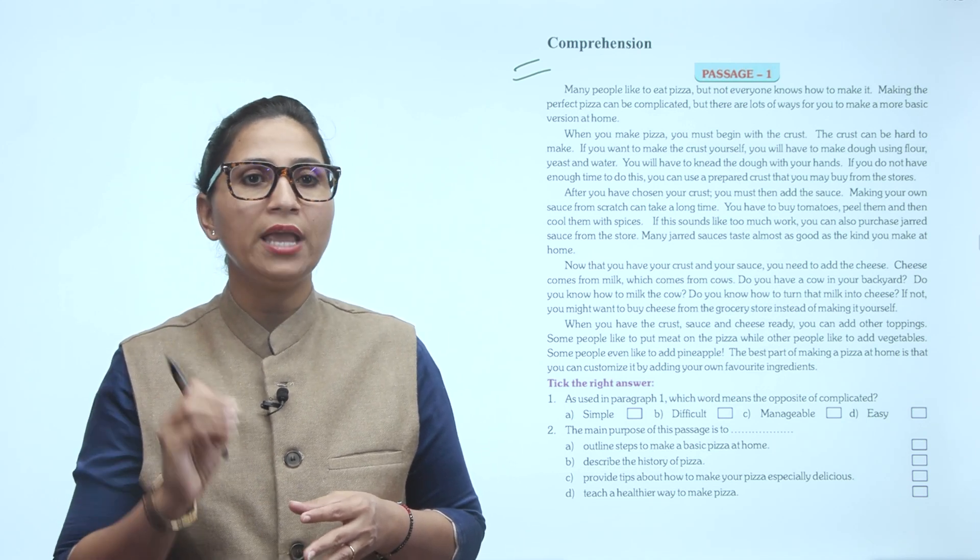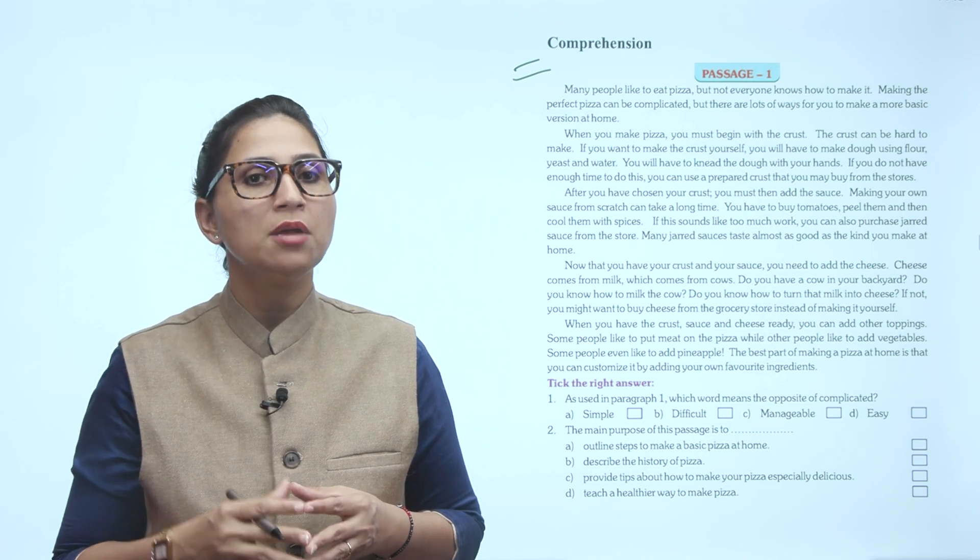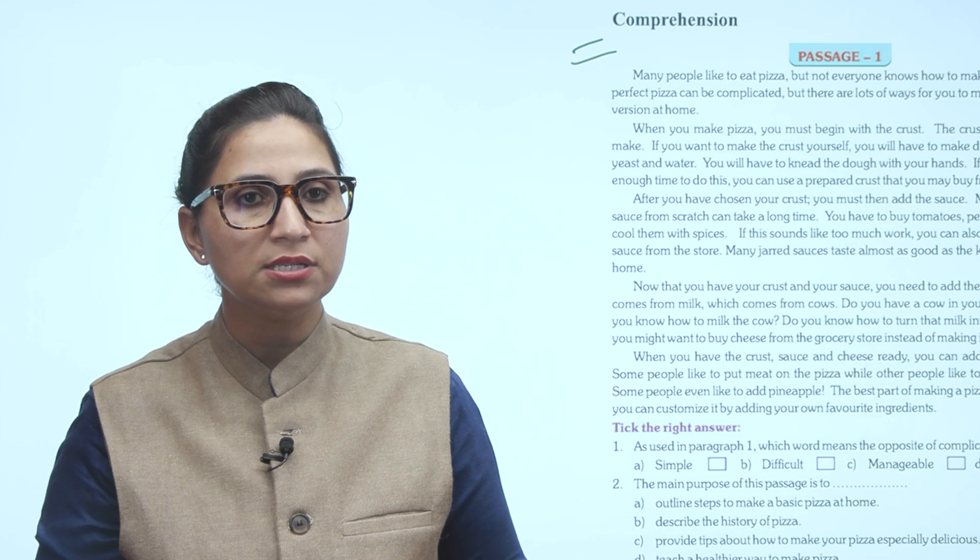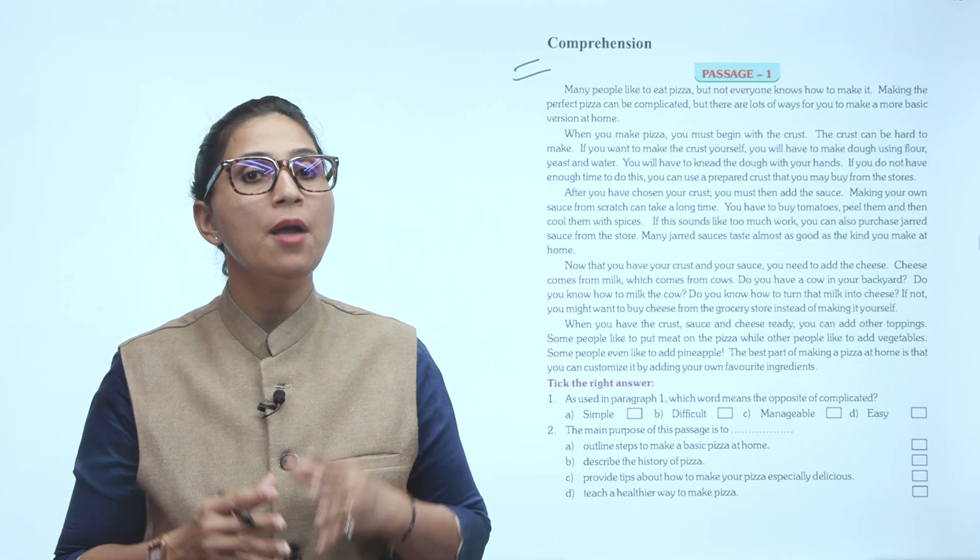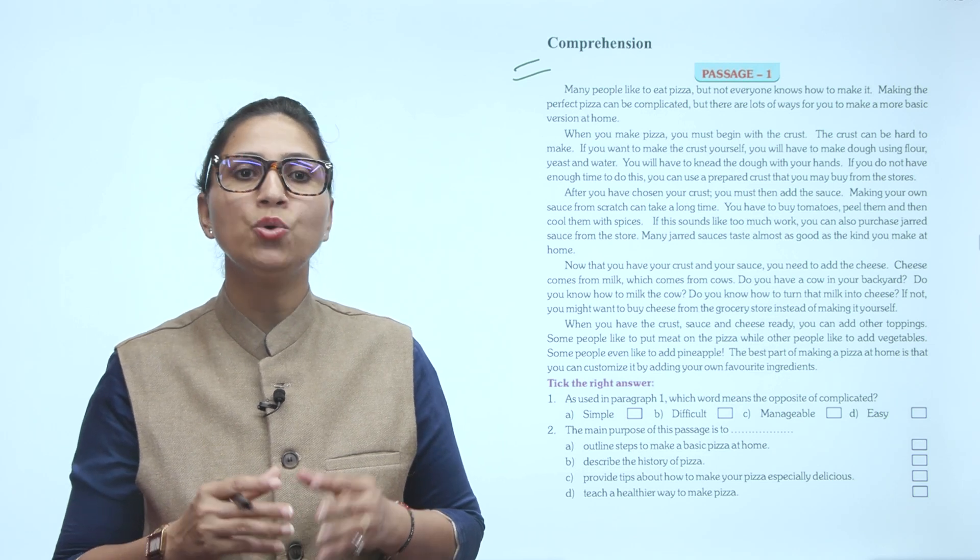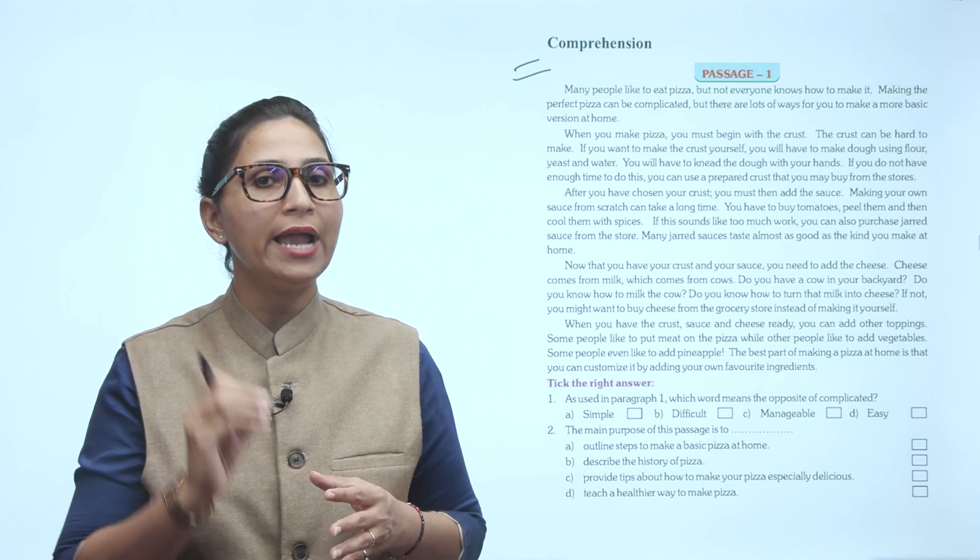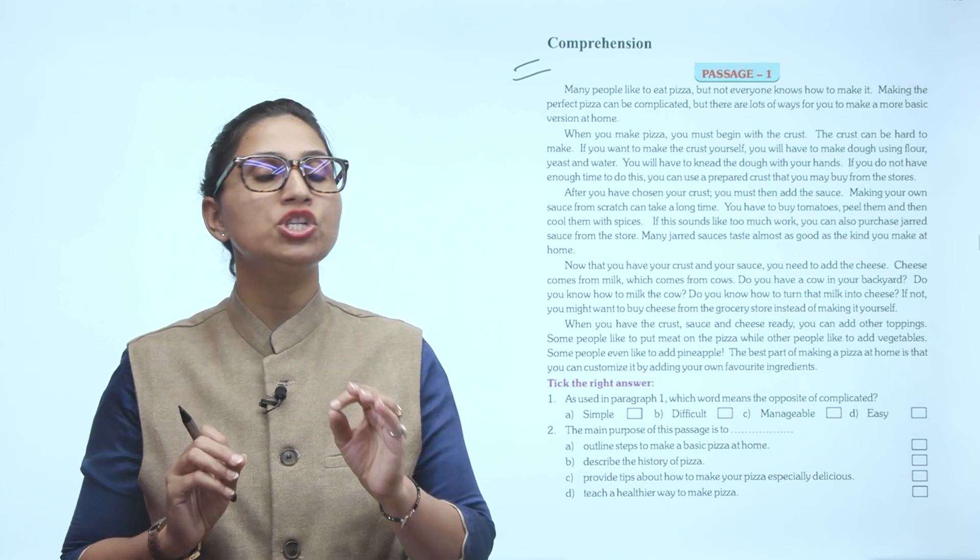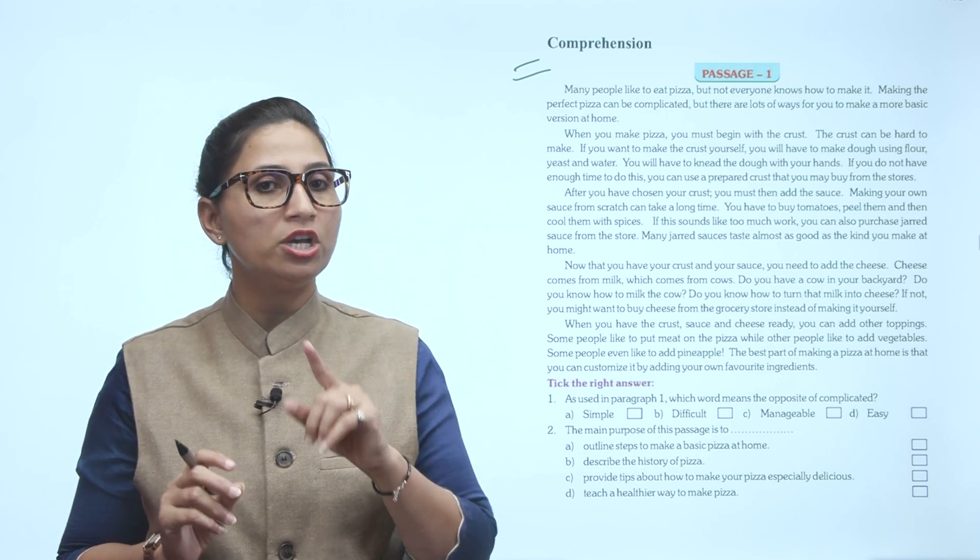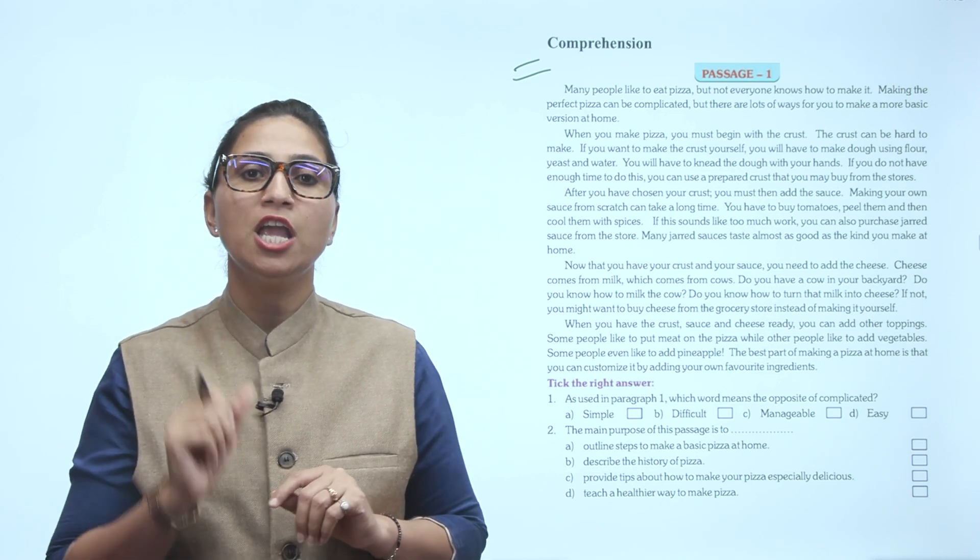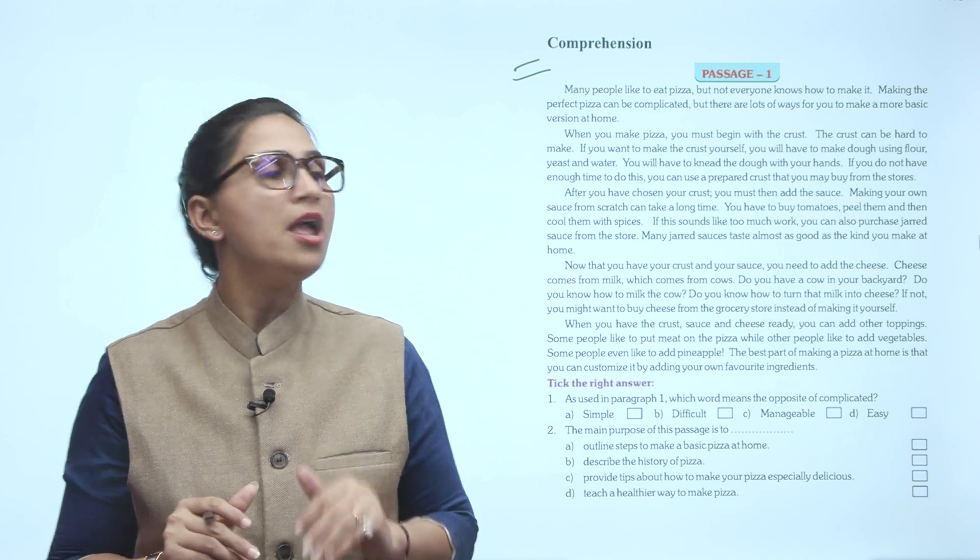When you have the crust, sauce, and cheese ready, you can add other toppings. Some people like to put meat on the pizza while other people like to add vegetables. Some people even like to add pineapple. The best part of making a pizza at home is that you can customize it by adding your own favorite ingredients. Now we are going to move on to our next paragraph.